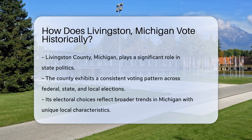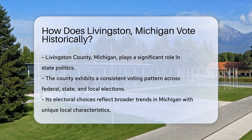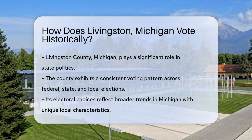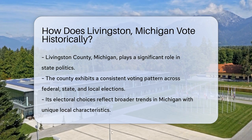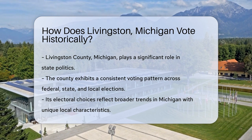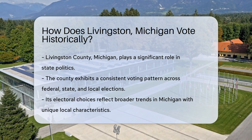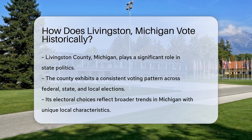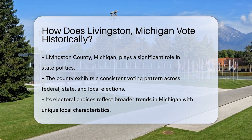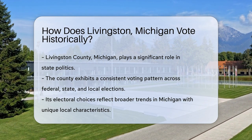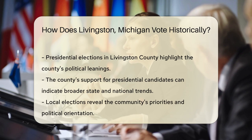Livingston County, Michigan is known for its vibrant communities and significant role in state politics. Understanding its voting history requires a look at past election results and voting patterns. This exploration sheds light on the political landscape of the county. Livingston County's voting history is marked by a consistent pattern in federal, state, and local elections. This consistency provides insight into the political preferences of its residents. The county's electoral choices reflect broader trends in Michigan while maintaining unique local characteristics.